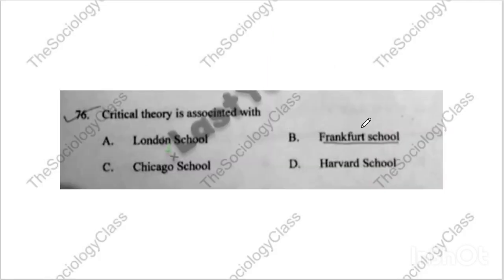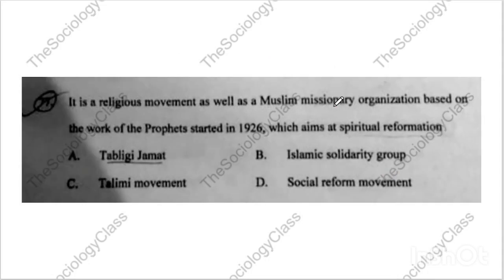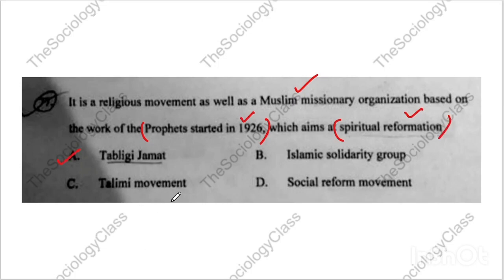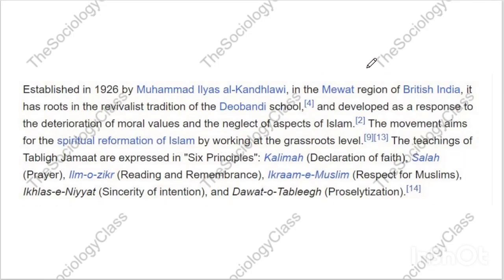Question number seventy-six: Critical theory is associated with Frankfurt School. Question seventy-seven: 'It is a religious movement as well as a Muslim missionary organization based on the work of the prophet, started in 1926, which aims at spiritual reformation.' The correct answer is A — Tablighi Jamaat. It was established in 1926. You can also read about who established it and its six principles. Questions of this type come in Jamia.